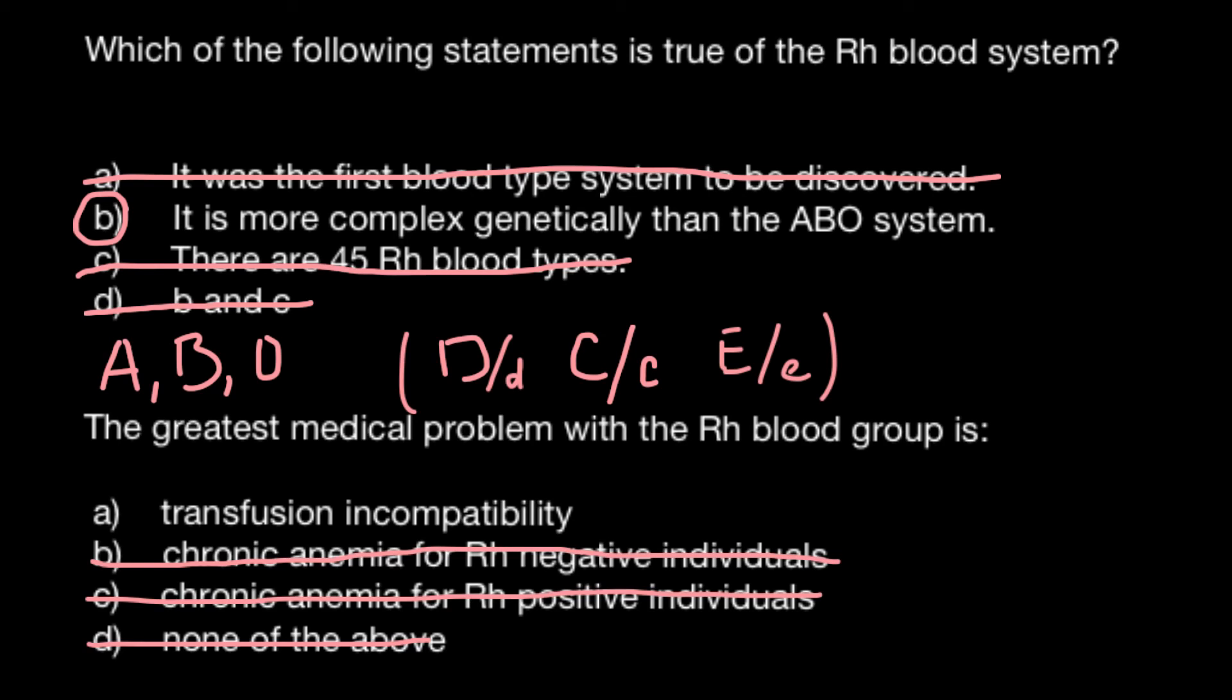The greatest medical problem is transfusion incompatibility. We cannot transfuse Rh positive blood to people who are Rh negative. We can transfuse Rh negative blood to people who are Rh negative and also to people who are Rh positive. So Rh positive people can get Rh positive or Rh negative blood, but Rh negative people can only get Rh negative blood for transfusion.